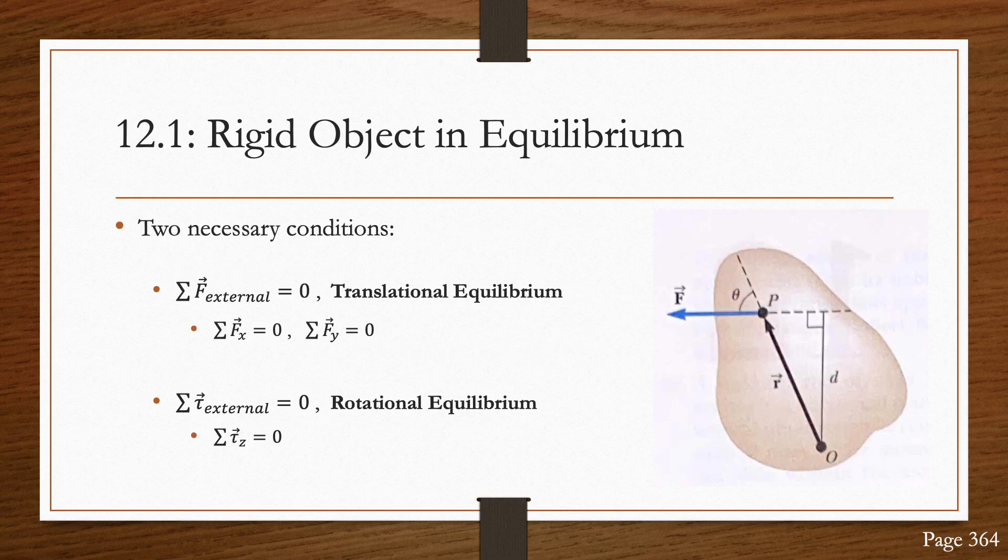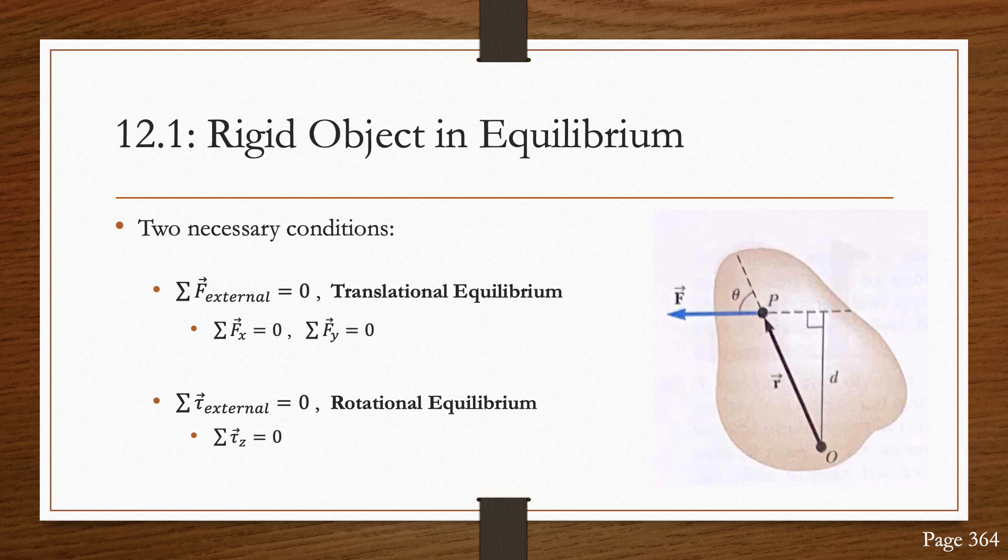With that being said, we have two necessary conditions for a rigid object in equilibrium. The first condition is a statement of translational equilibrium, which states that the net external force on the object must equal zero. Also, the forces in the X and Y directions need to be balanced.